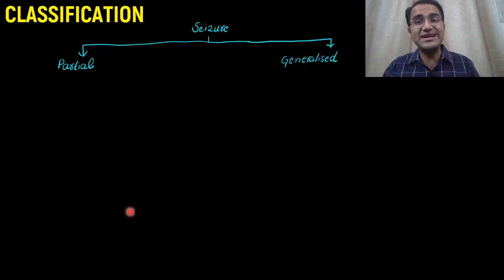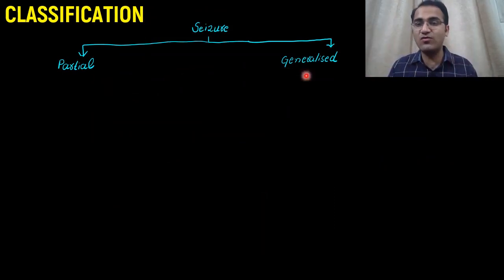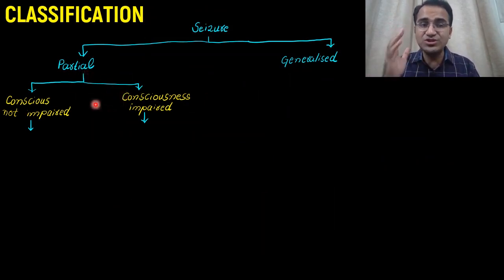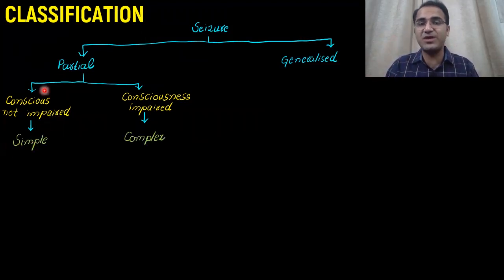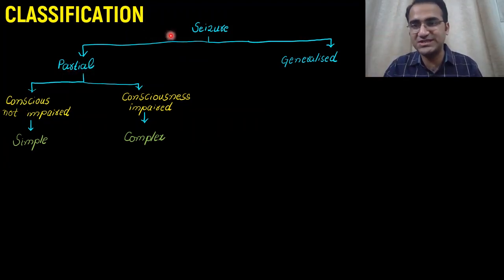Types of seizures can be divided into generalized and partial seizures. If one part of the body is seizing, that is called a partial seizure; if the whole body is involved, that is a generalized seizure. Partial seizures are divided into two types depending on consciousness. If consciousness is not impaired and the patient is seizing in one part of the body, that is a simple partial seizure.